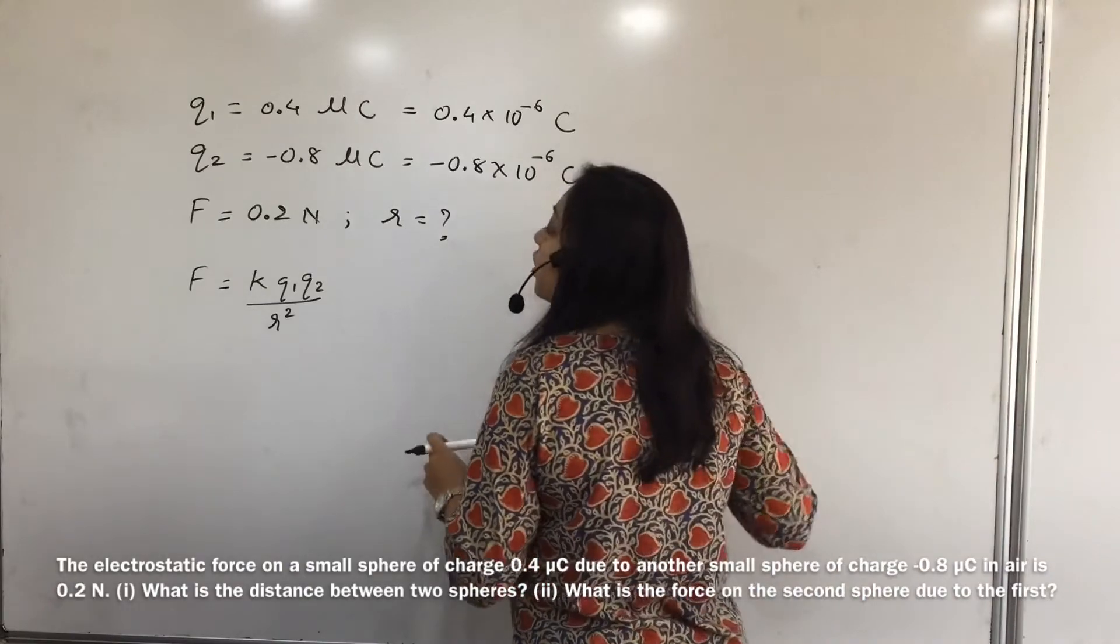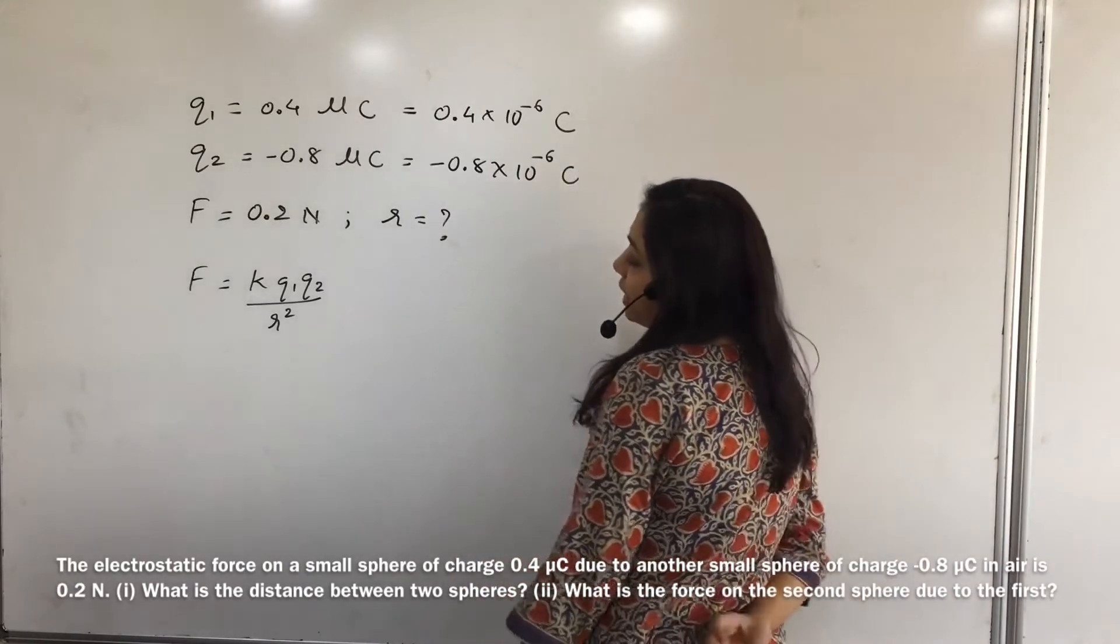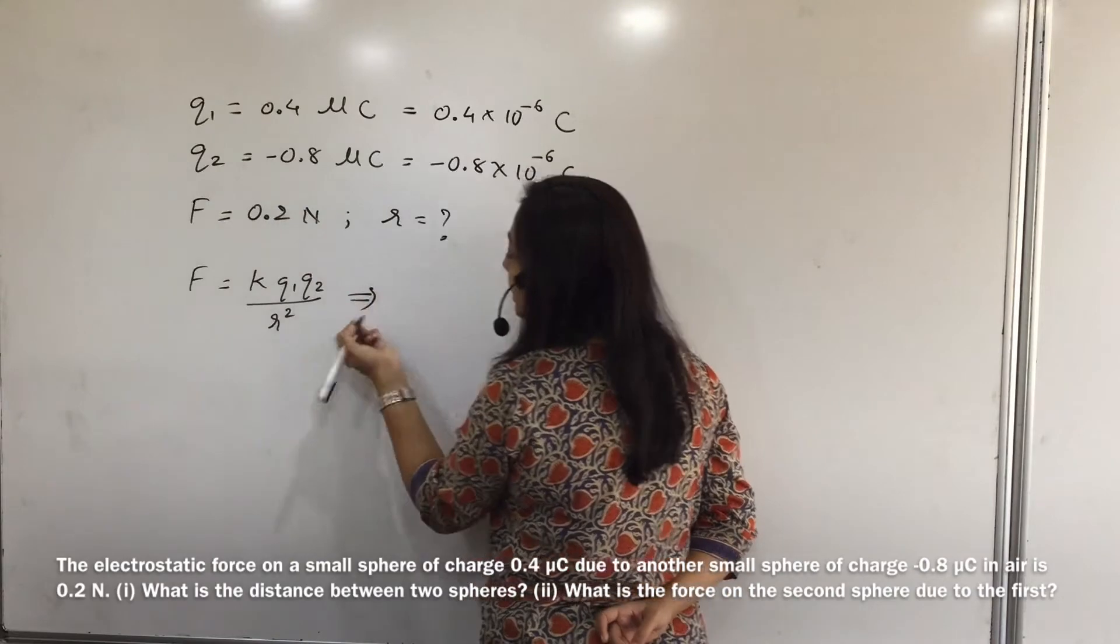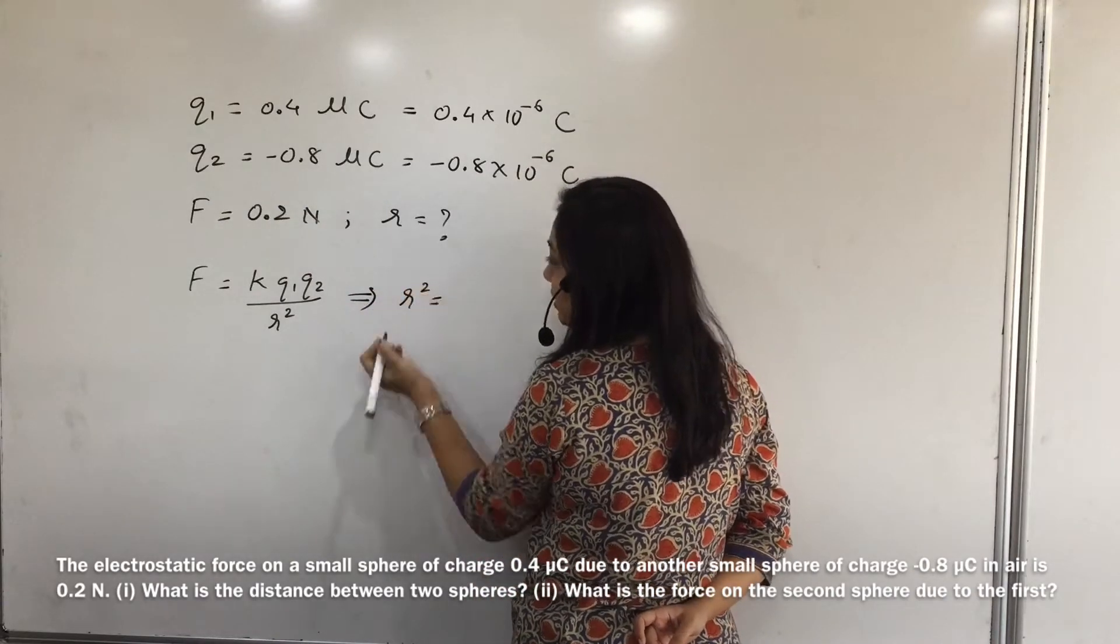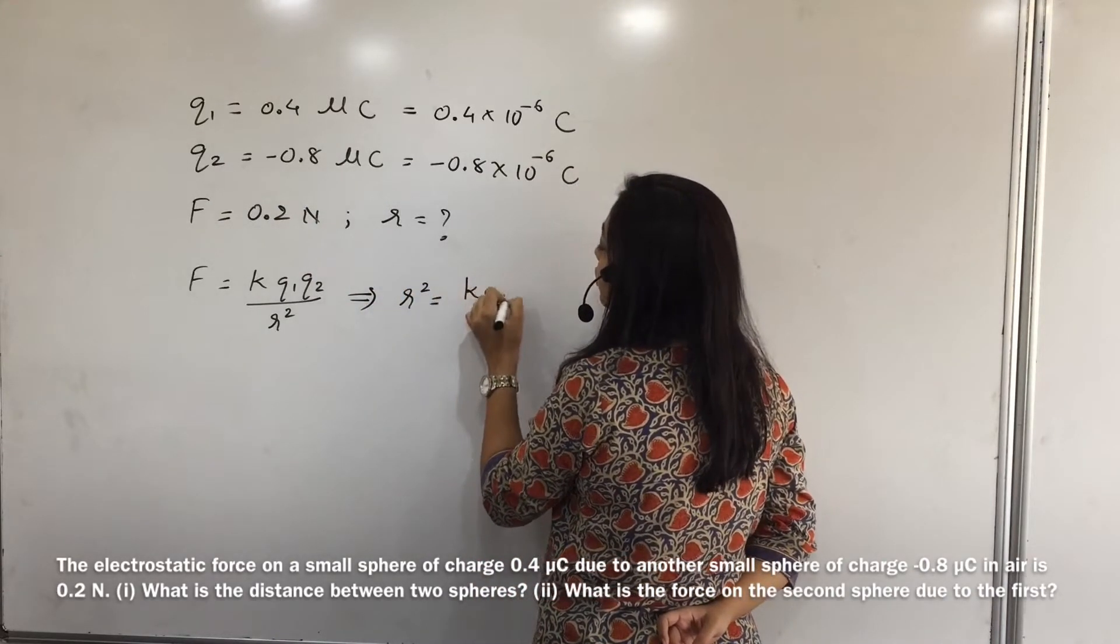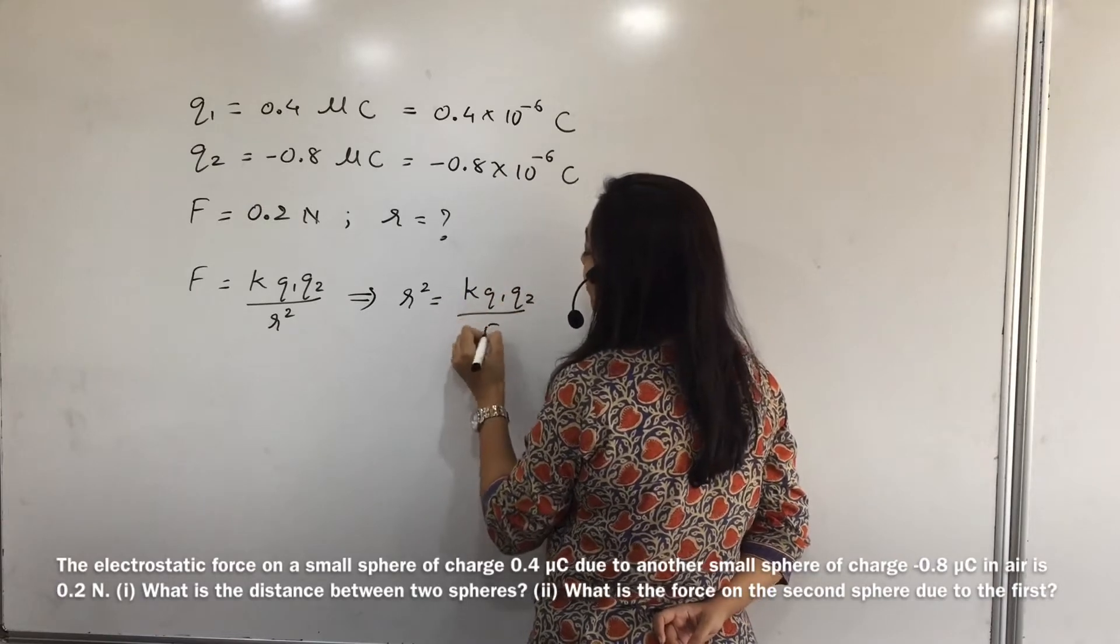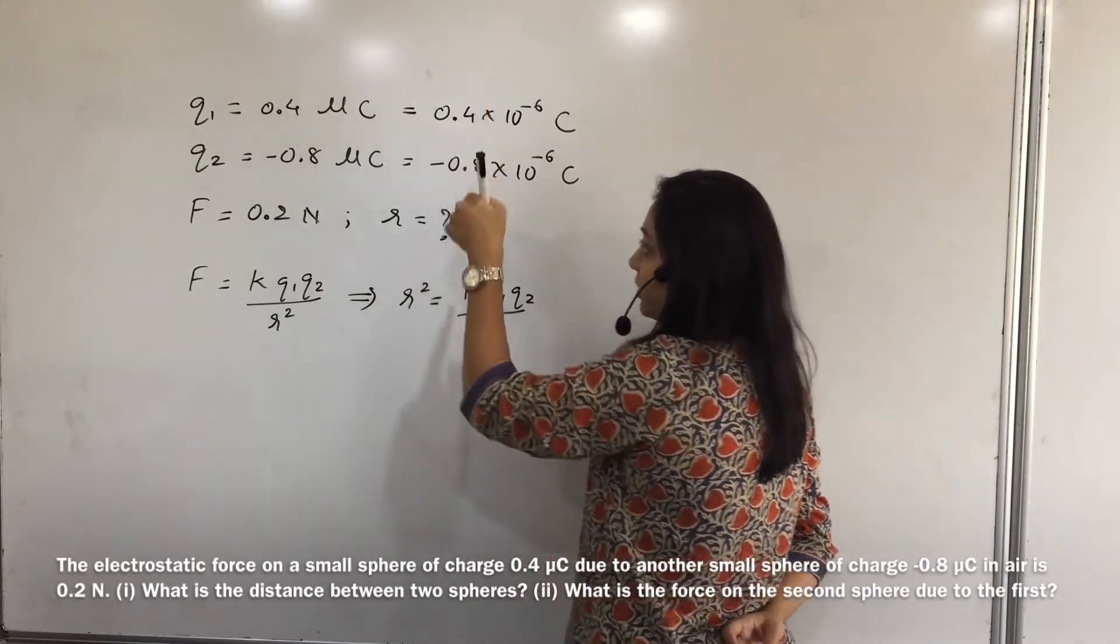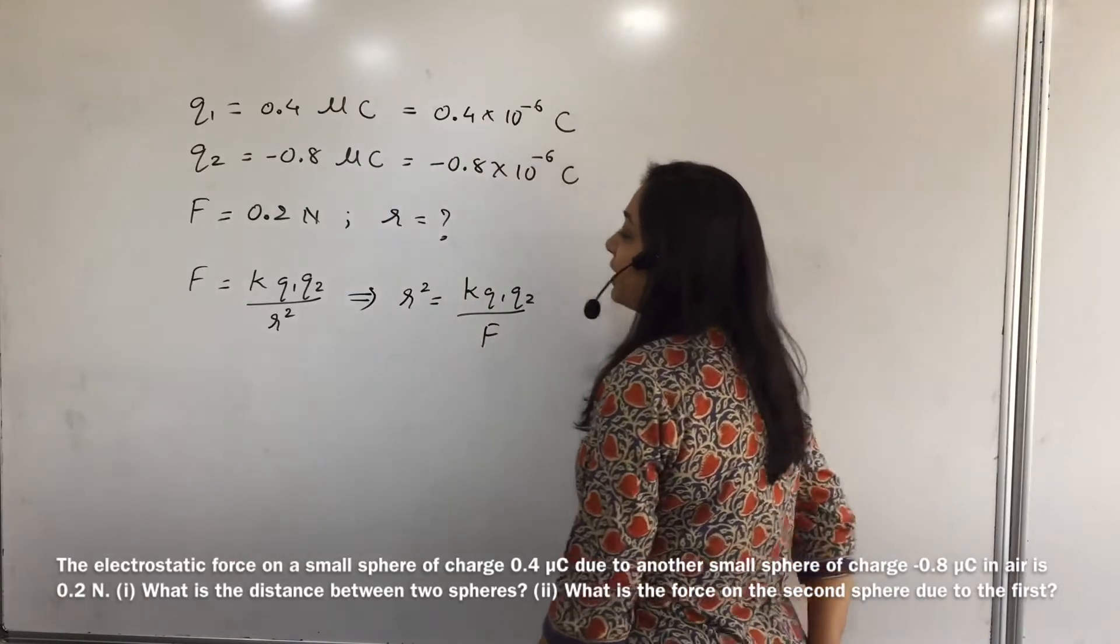Coulomb's law states F is equal to k q1 q2 over r squared, which can be rewritten as r squared is equal to k q1 q2 upon F. So if we have to find out the distance between the two given spheres, we have to find out.